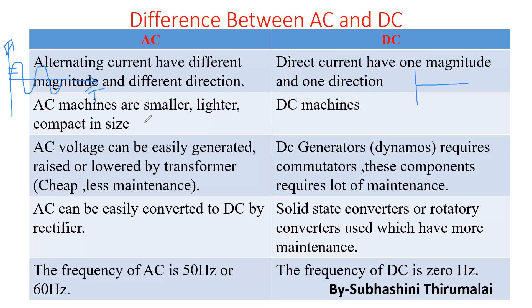AC has a frequency of 50 Hz or 60 Hz — 60 Hz is the on-board frequency — while DC has a frequency of zero.